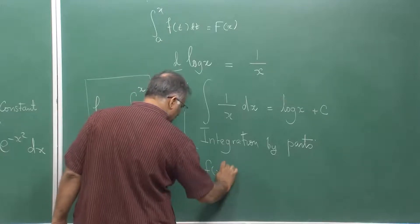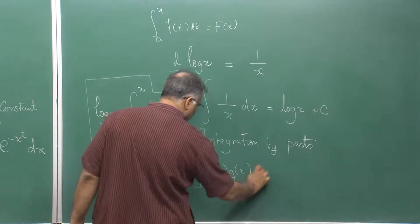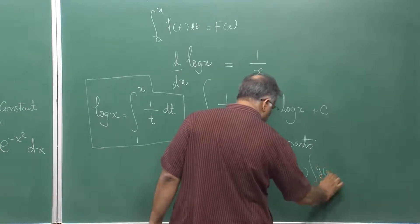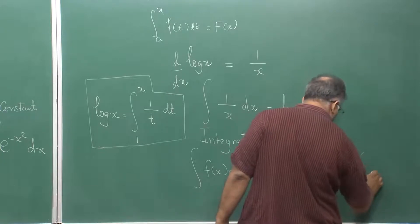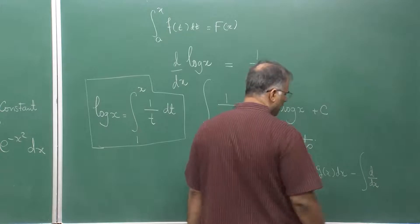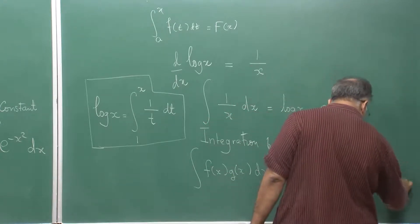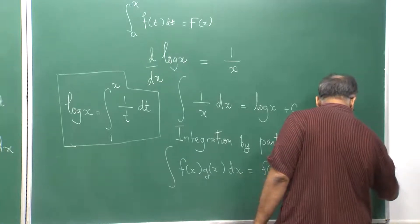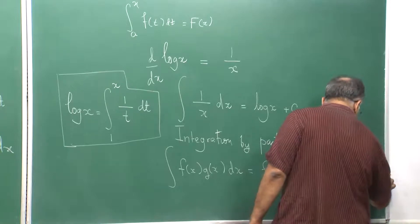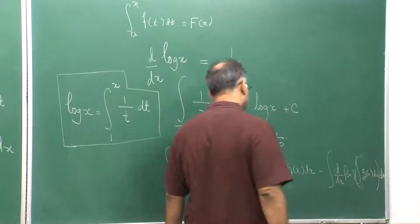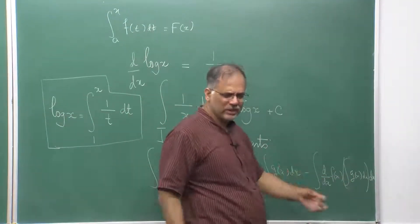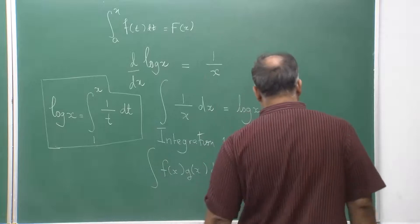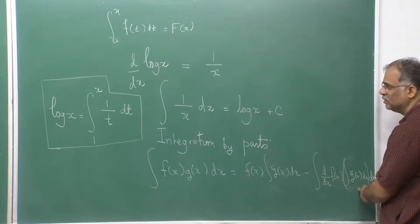I am integrating f(x) into g(x) dx. What you do: keep the first function fixed, integrate the second function, then subtract the integral of the derivative of the first function f'(x) times the integral of g dx — all with another dx. When you integrate the inner part, do not write the constant because it will finally get absorbed in the constant at the end. You do not put the limits here.